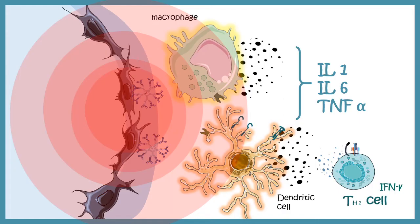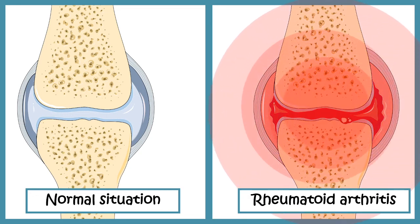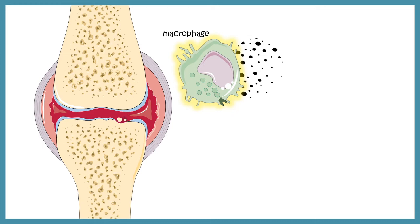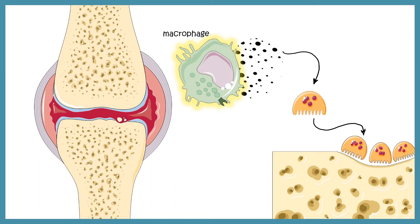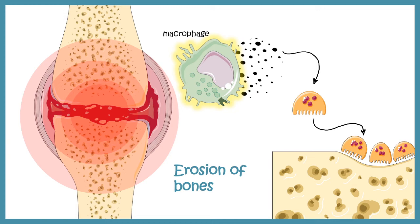The activated macrophages secrete inflammatory cytokines that activate osteoclast activity, triggering bone erosion and making the joints more rigid, hard, and less flexible. This is detrimental for the patient, as the mobility of the joint is lost due to this inflammatory response and enhanced osteoclast activity, with persistent inflammation sensation throughout.